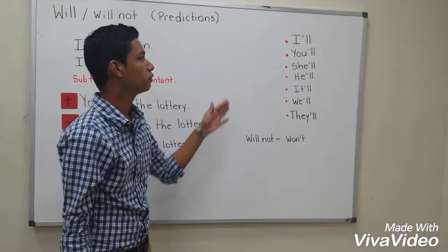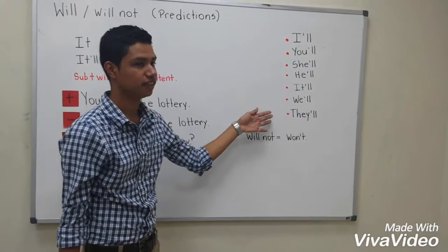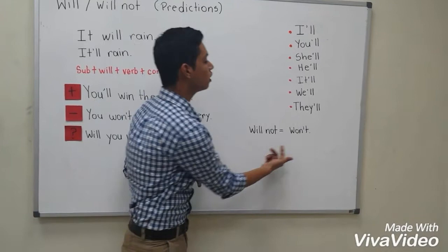And over here we have all the contractions of the pronouns: I'll, you'll, she'll, he'll, it'll, we'll, and they'll. And what's the contraction for will not? The contraction for will not is won't.